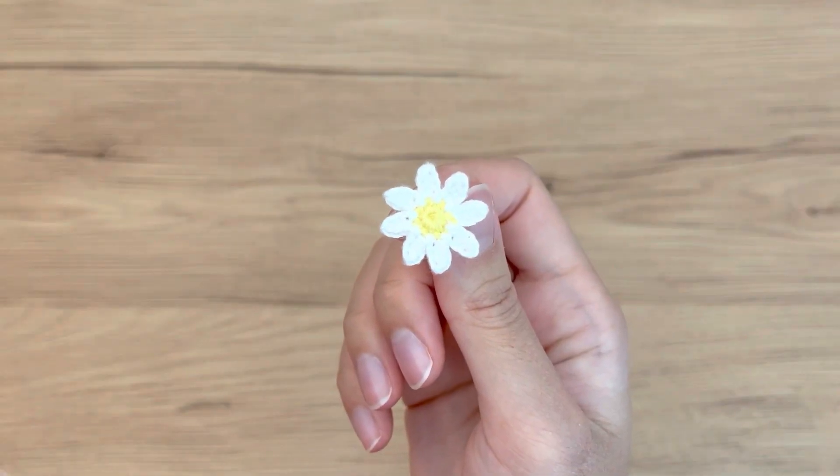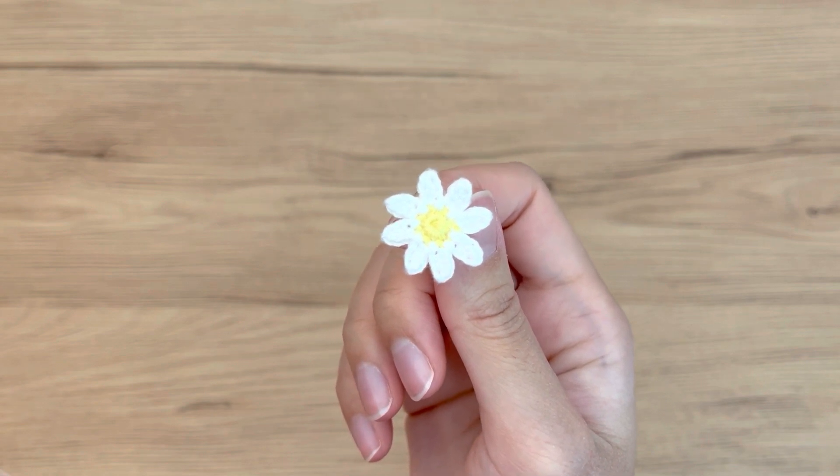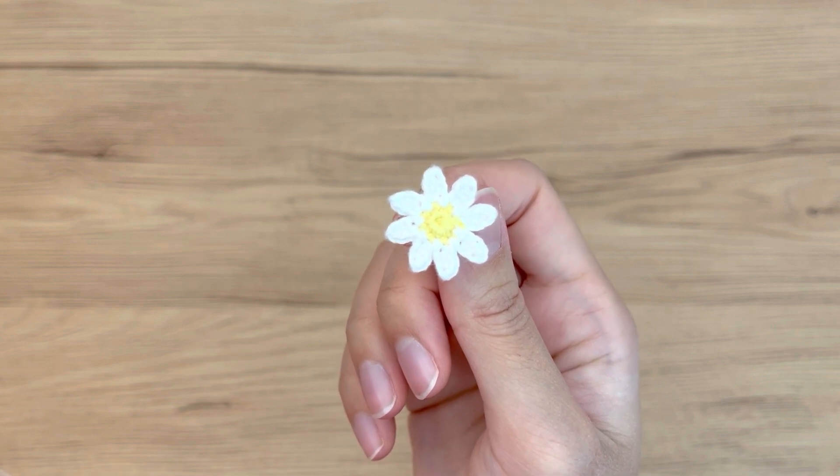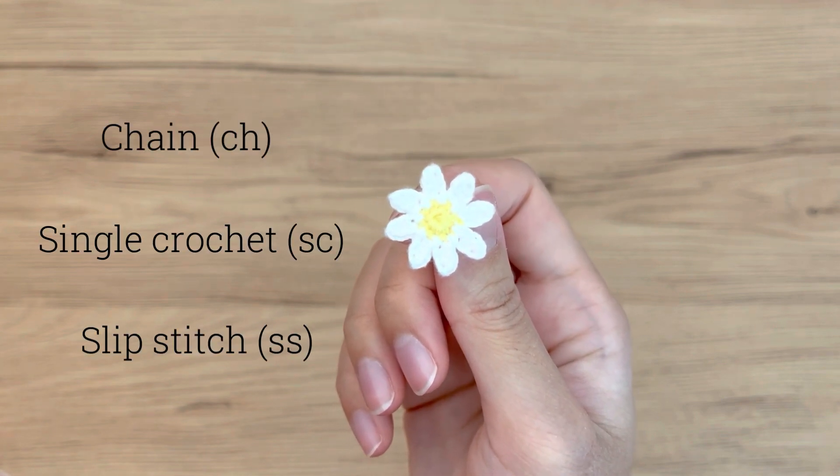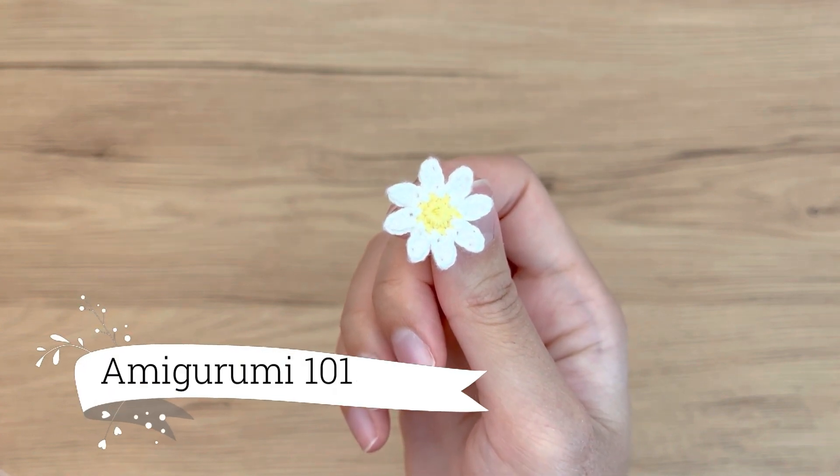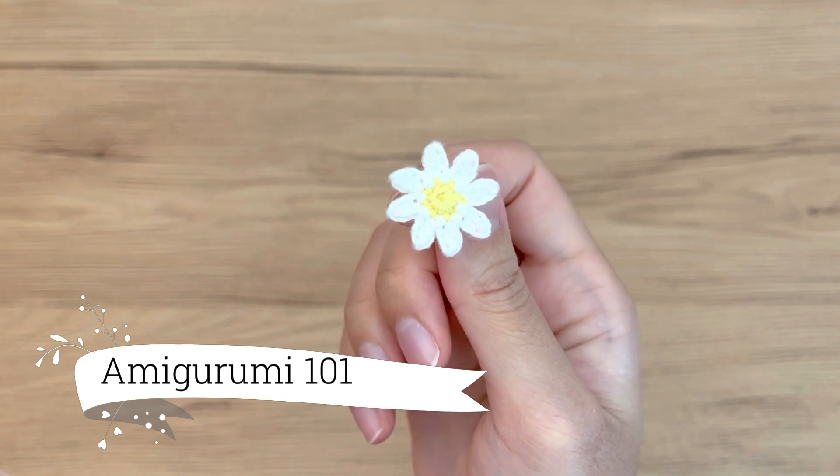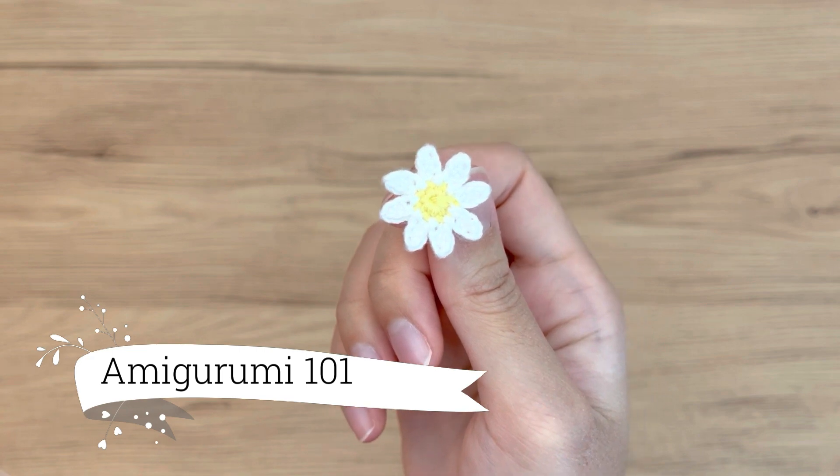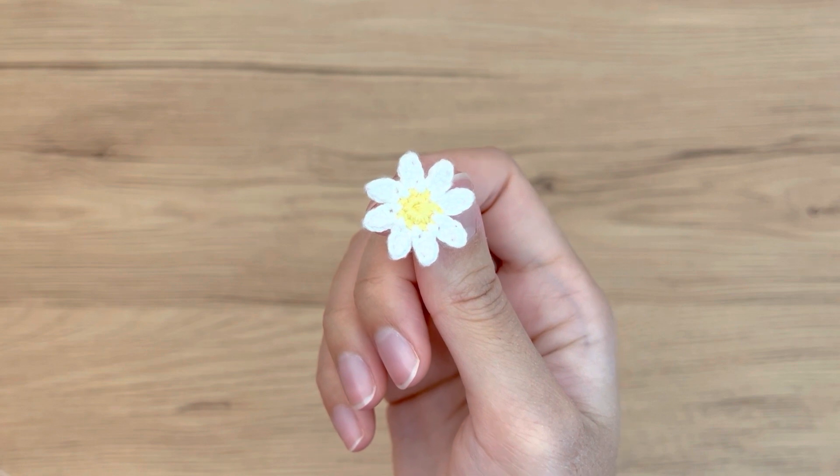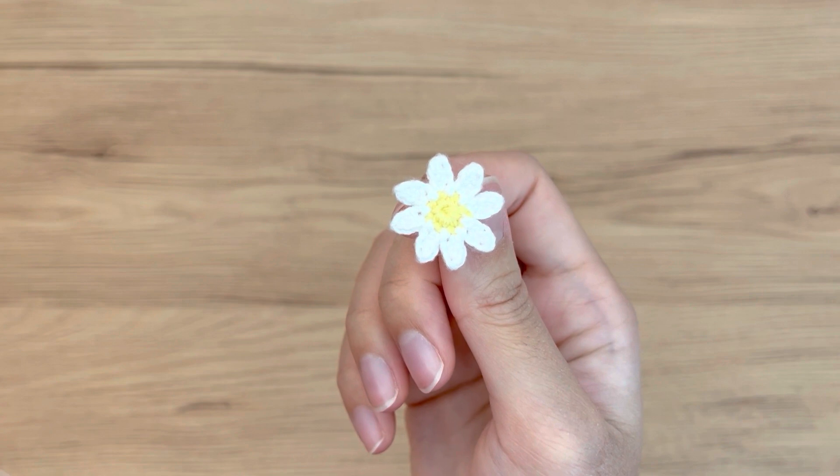Before we start making this daisy pin, I just want to let you know that if this is your first time crocheting, you will first need to know all of these stitches and basic techniques. If you need additional help, please check out my Amigurumi 101 playlist. I have tutorials in a much slower pace going through each stitch type in detail. However, if you have crochet for a while now, you should find this tutorial very simple to follow.